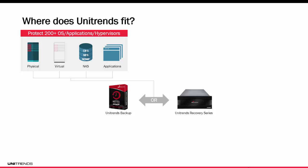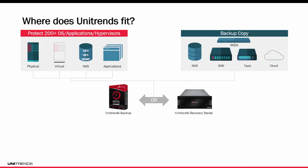Once the backups have landed either on your backup storage target or your Recovery Series appliance, you can then copy those backups to a cold target. The cold targets include our RXDA — a disk archiving device — so you can copy your backups onto hard drives. You can also copy those backups onto a NAS, onto a LUN on a SAN, an LVD, SAS, or Fibre Channel tape drive, or even some public cloud options.